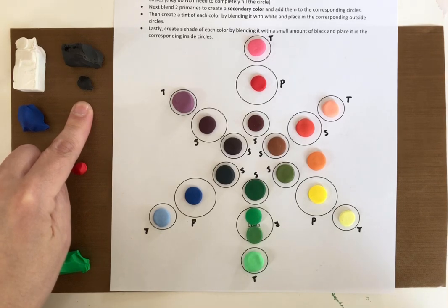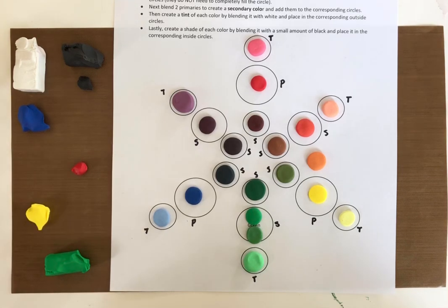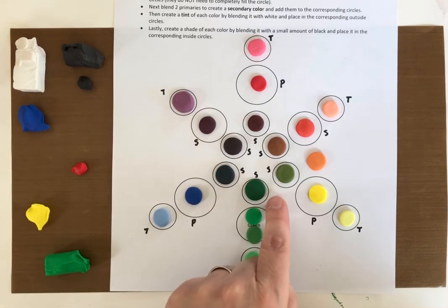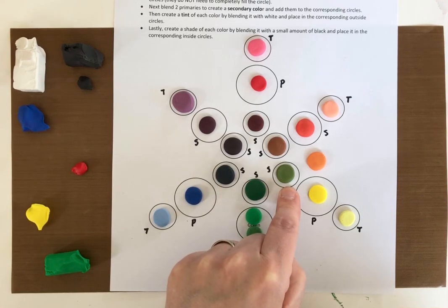Part of why this dark yellow looks green is because black pigments are generally not actually black. They're usually a really, really, really dark color of a different color. So this is either a really, really dark blue or a really, really dark green, which is why when I mixed it with the yellow, it came out green.